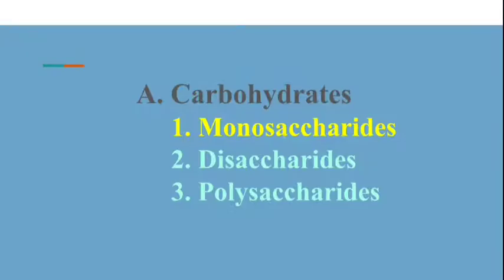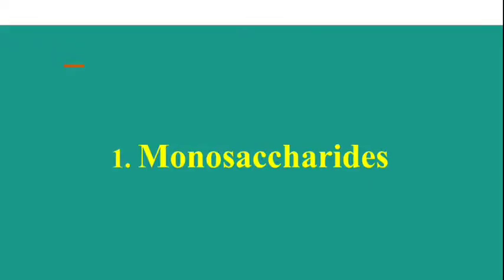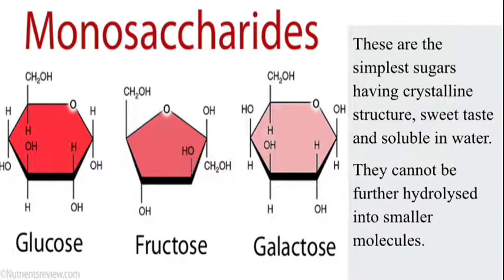Let's turn to the first point: types of carbohydrates and monosaccharides. 'Mono' means single and 'saccharide' means a sugar molecule — in other words, sugar molecules in a single unit. These are the simplest sugars, having a crystalline structure, sweet taste, and are readily soluble in water. They cannot be further hydrolyzed into smaller molecules.